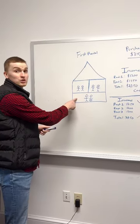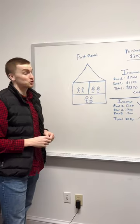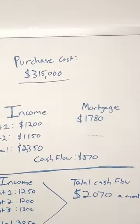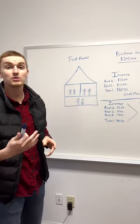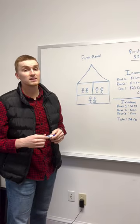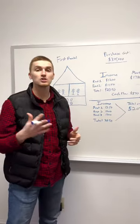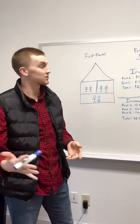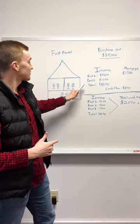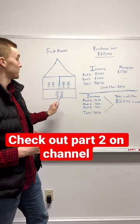We lived in one unit and rented out the other two. We bought it for $315,000 and utilized an FHA loan. We only had to put 3.5% down to purchase this property, so we didn't need a ton of cash to get started. We were able to rent out the two units while living in one.